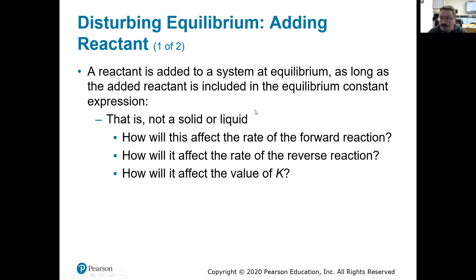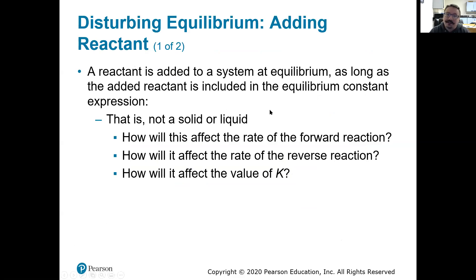The first thing we're going to look at is the concentrations of the reactants. We could have multiple reactants — A, B, and C — and we could change the concentration of all of them or just one. So we're going to start with adding a reactant. These have to be components that are in the equilibrium equation — so no solids, no liquids. It has to be a gas or in solution.